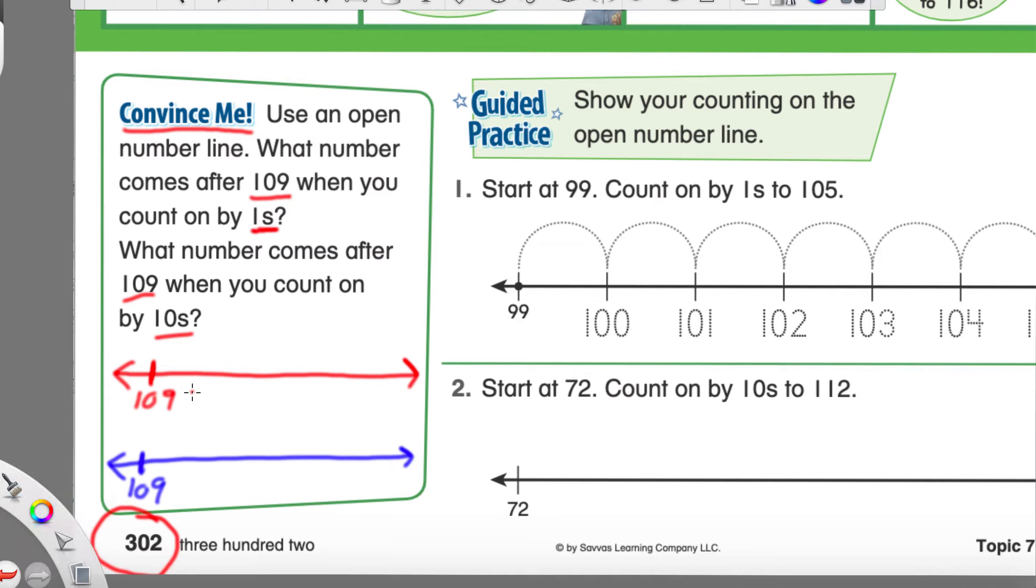So, I know it says, just says what number comes after. But, for counting by ones, I want you to tell me what are the next two numbers that come after 109. I think a lot of us probably did that pretty quick. If you need more time, pause the video and then play it as soon as you're done.